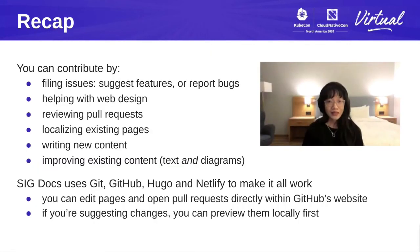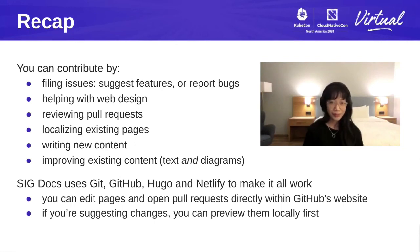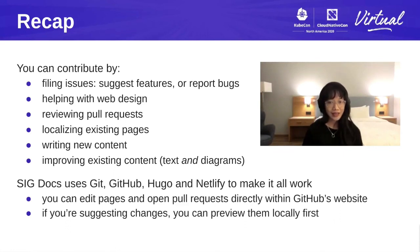You can contribute by filing issues, suggesting features, or reporting bugs. When submitting a bug report, include log errors. You can also help with web design, reviewing pull requests, localizing existing pages, writing new content, and improving existing content by adding text or diagrams. SIG docs uses Git, GitHub, Hugo, and Netlify to make it all work. You can edit pages and open pull requests directly within the GitHub website, and if you're suggesting changes, you can preview them locally first.